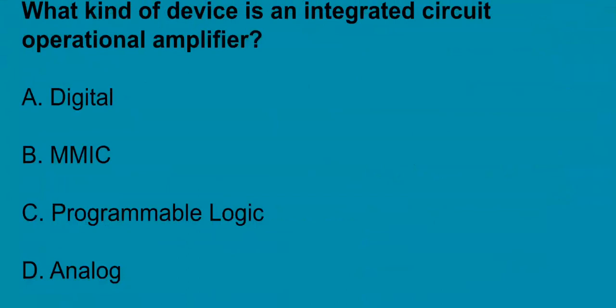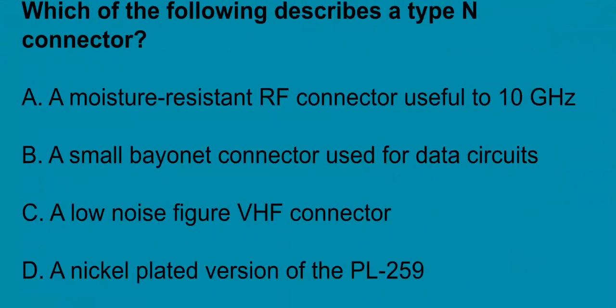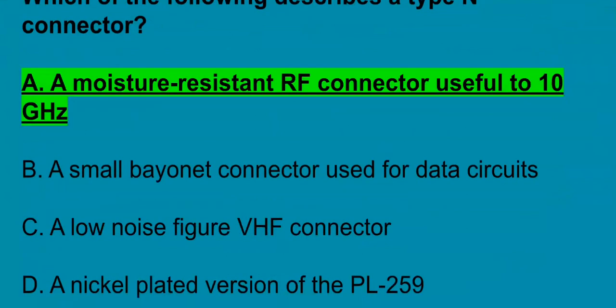G6B06, what kind of device is an integrated circuit operational amplifier? That's going to be analog. G6B07, which of the following describes a type N connector? A moisture resistant RF connector useful to 10 GHz.